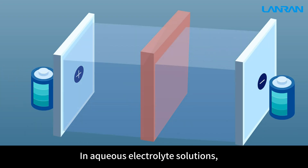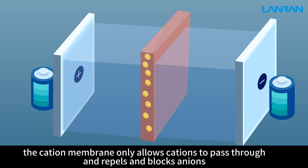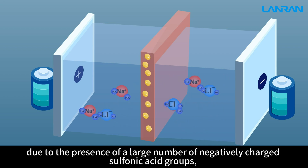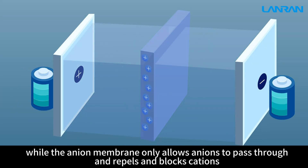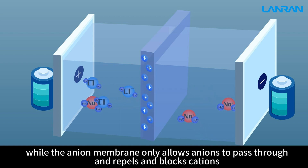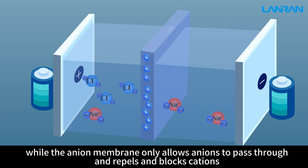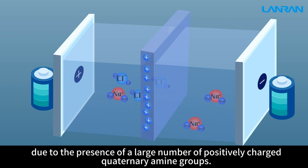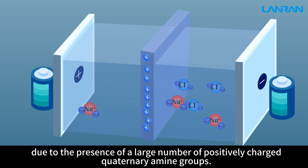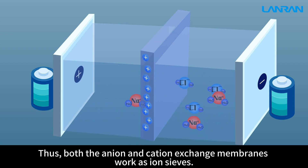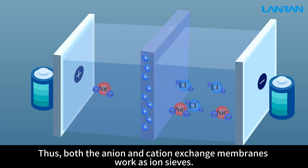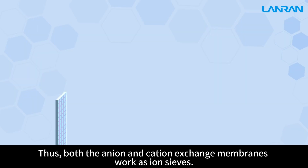In aqueous electrolyte solutions, the cation membrane only allows cations to pass through and repels and blocks anions due to the presence of a large number of negatively charged sulfonic acid groups, while the anion membrane only allows anions to pass through and repels and blocks cations due to the presence of a large number of positively charged quaternary amine groups. Thus, both the anion and cation exchange membranes work as ion sieves.